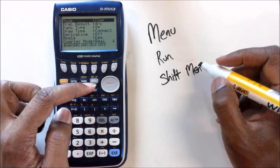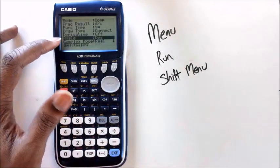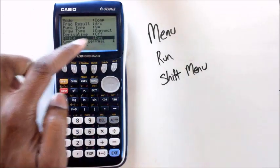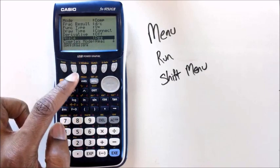So what you want to do at this point is you want to head down to the part where it says angle, and you can see how right now it's set on degrees. If you want to change it to radians you need to click F2.